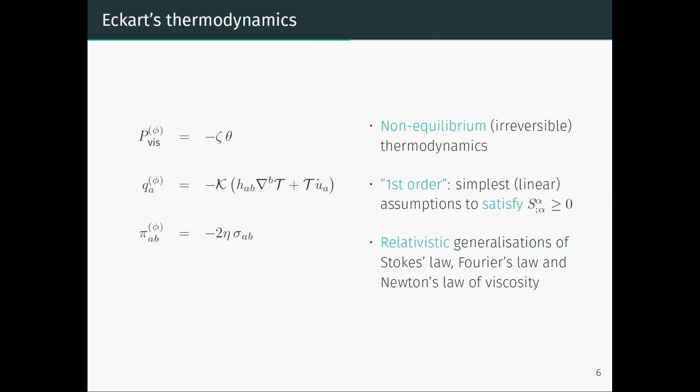Once we do this, we can apply a non-equilibrium thermodynamical description, condensed in three constitutive equations. These equations relate dissipative quantities — such as the viscous pressure and heat fluxes — to kinematical and thermodynamical quantities. K is the conductivity of the fluid and T is its temperature, which we're really interested in. These constitutive relations are the simplest linear assumptions that satisfy the covariant form of the second law of thermodynamics, and they are relativistic generalizations of well-known laws.